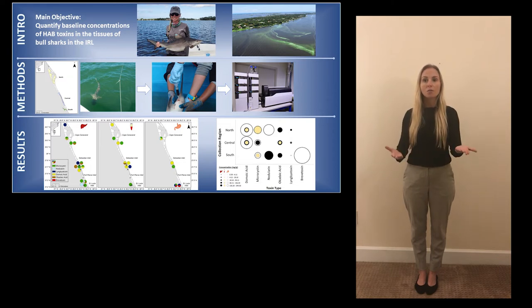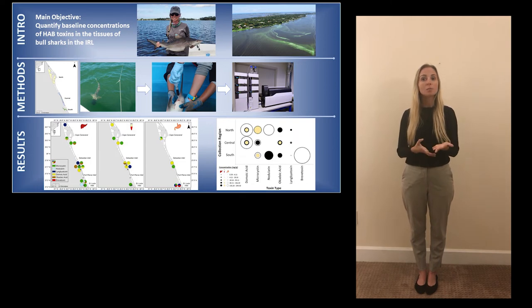Fish, however, are known vectors of many HAB toxins and the Indian River Lagoon is home to 700 species. How can we understand toxins present in many species of fish at once and the ecosystem as a whole?